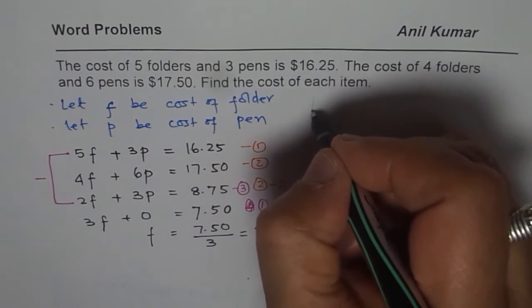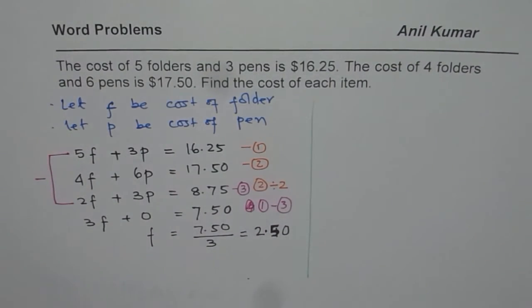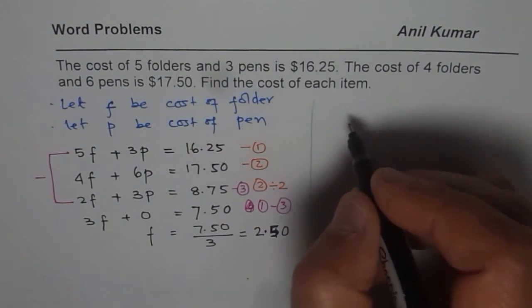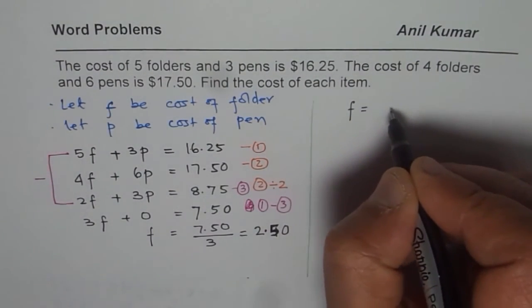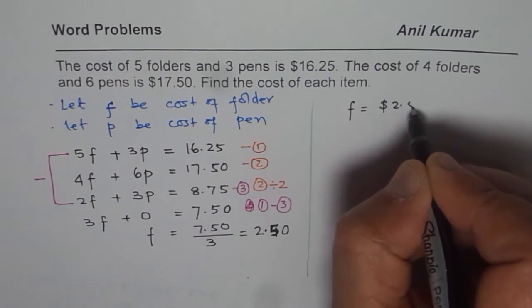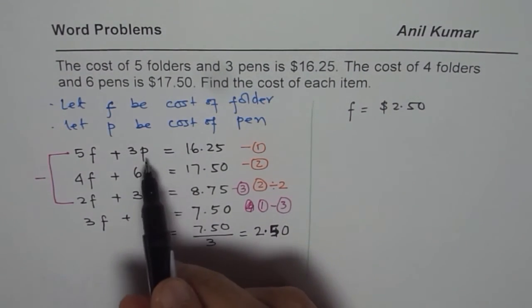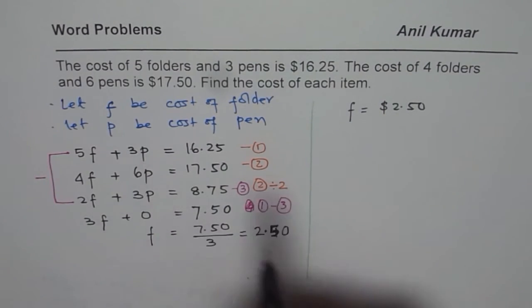Now let us find the cost of each pen. To find the cost of pen, what we know now is cost of the folder is $2.50. So we can substitute this cost in any of our equations and solve for the other variable.